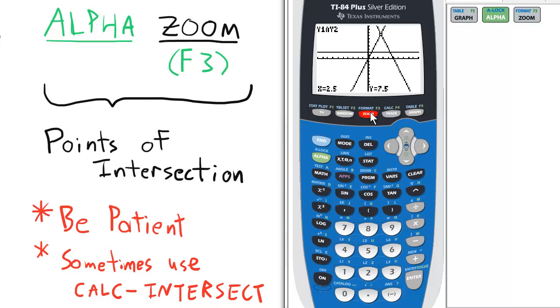And notice a few things here. First, we have a blinking cursor on a point of intersection. In the upper left-hand corner of the view screen, we notice it's the intersection of lines Y1 and Y2. And the coordinate pair is given here at the bottom. That's the coordinate pair 2.5 comma 7.5.